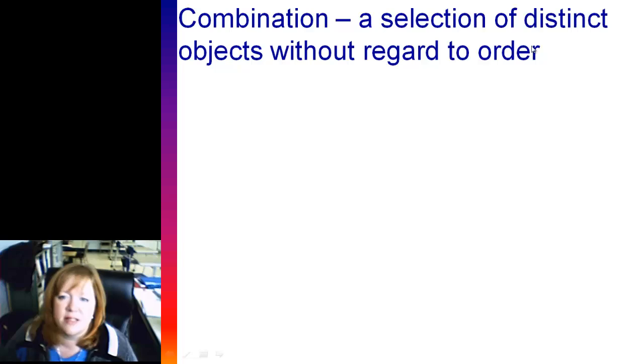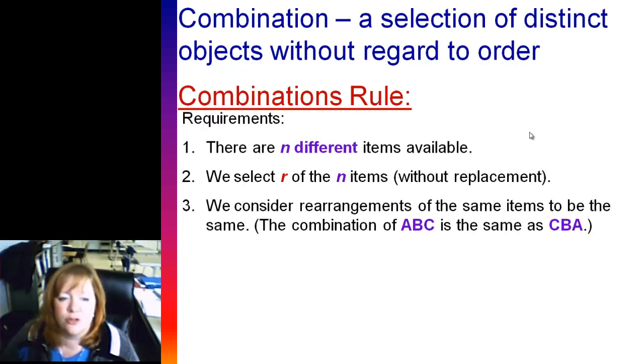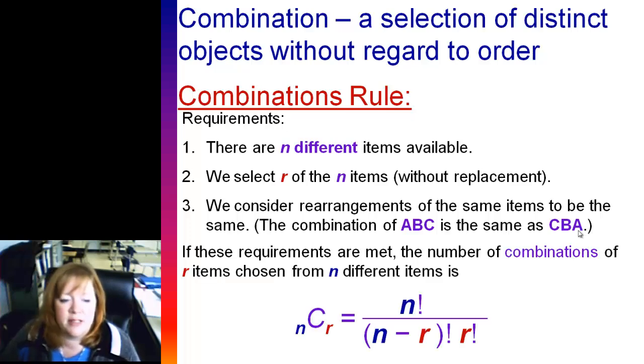Combination. This is our next guy. It's a selection of distinct objects, which means different, without regard to order. That's important. So here's our combinations rules. There's n different items available, and they're different. We select r of them without replacement. But in this case, ABC is the same as CBA. So for example, if you have a rose, a lily, and a daisy, that's the same as a daisy, a lily, and a rose. It doesn't matter the order because you're choosing them. Colors, flower types, that kind of stuff. You're just picking them. This is the combinations formula. n choose r. And I like the n choose r kind of thing because it's got a C for choose. The difference between this formula and the last formula is you have an r factorial over here. This r factorial is to divide out those repetitions, ABC, CBA, those repeated permutations. So it will divide those out.